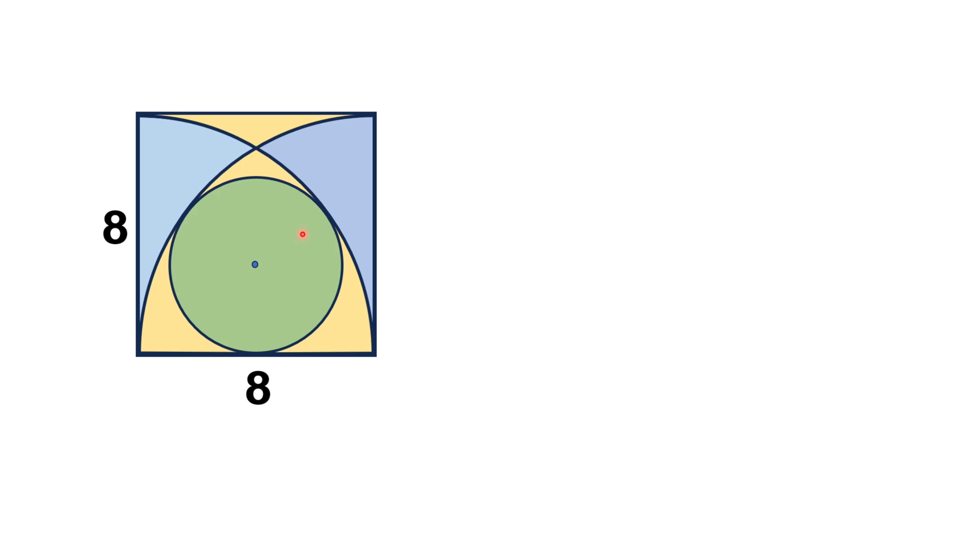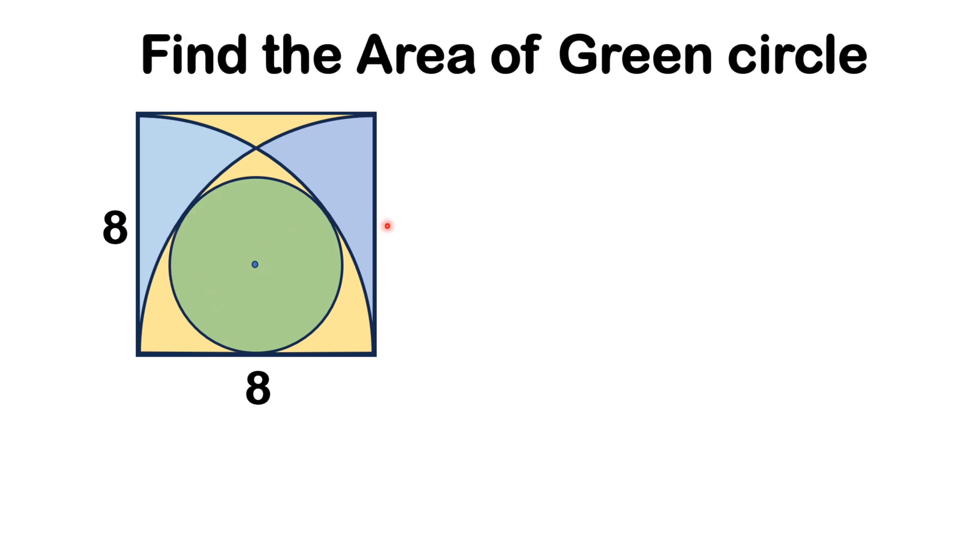And from this given data, we have to find the area of this circle, which is green shaded.